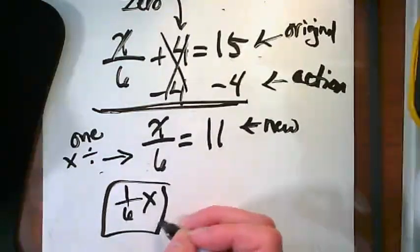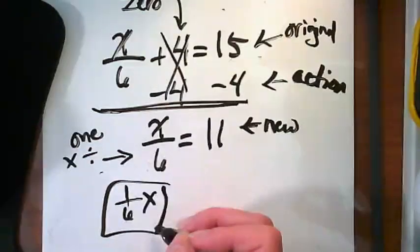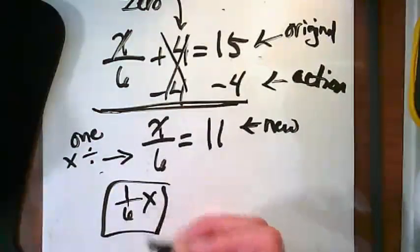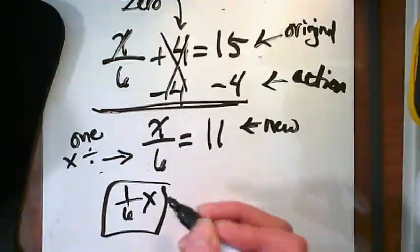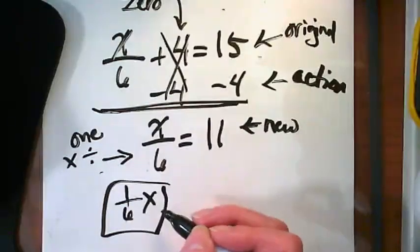This is nice to picture, though, because it does give us an idea of what's really there that we need to turn into a 1. There's a 1 over 6 there, and what is the reciprocal of that?